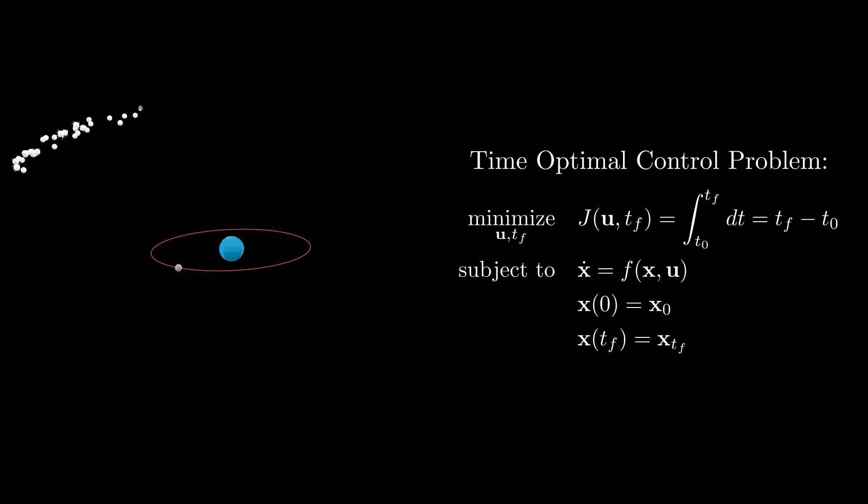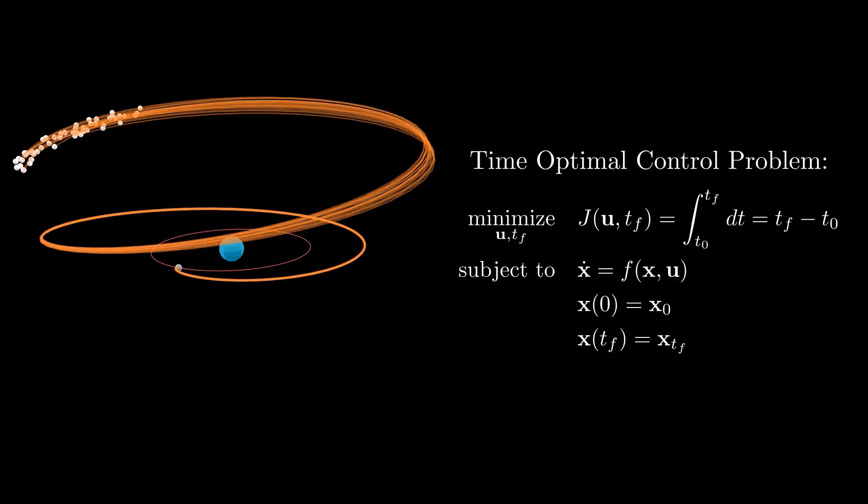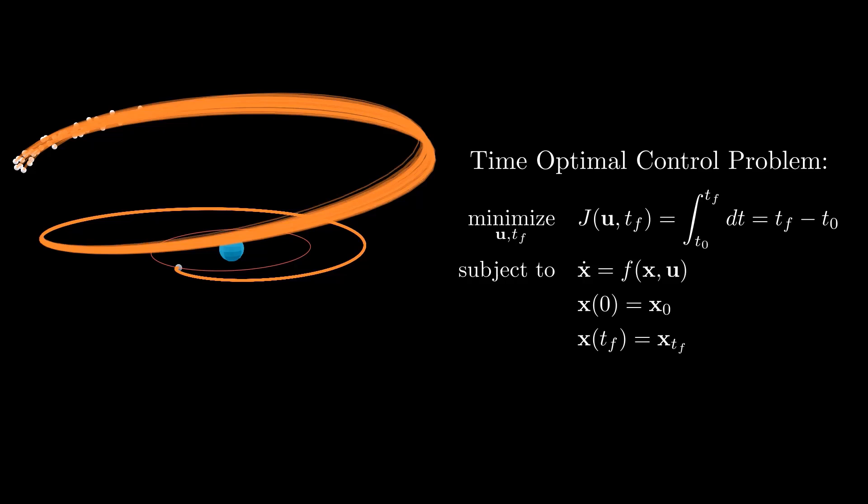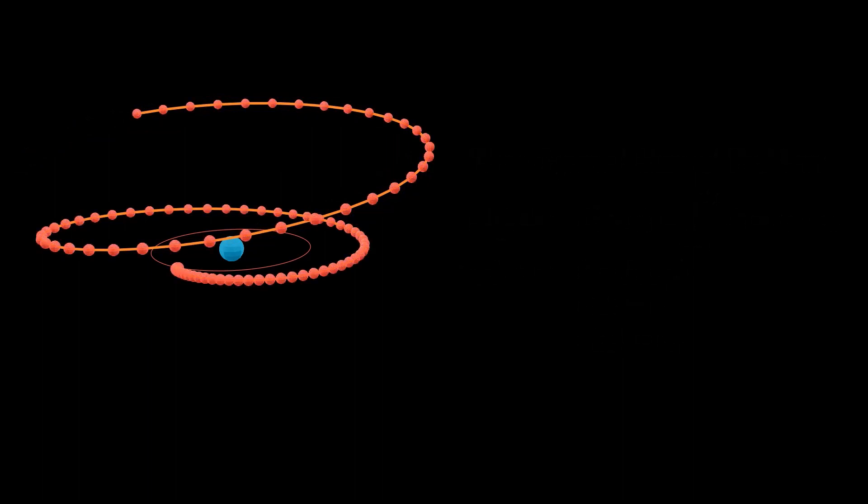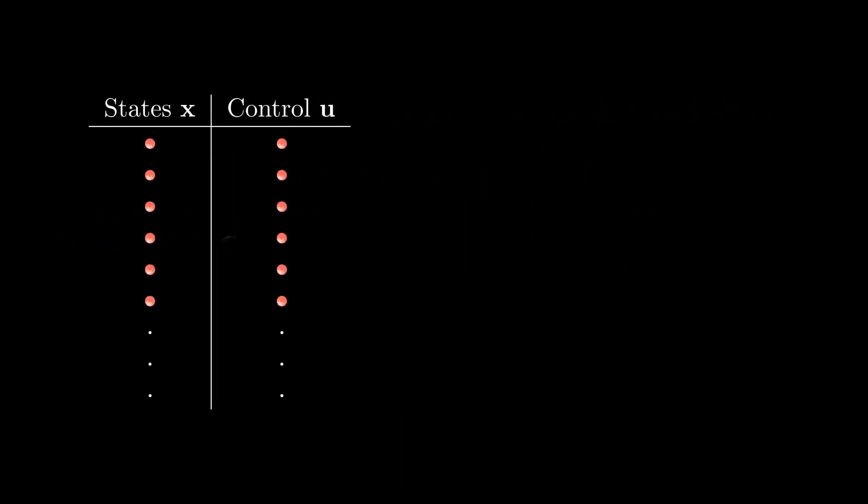Consider solving thousands of two-point boundary value problems between a range of different initial conditions but with the same final conditions. This results in a bundle of trajectories which roughly encompasses the state space the spacecraft might encounter during the mission. Let's now sample points along each trajectory. Since these are all optimal trajectories, each sample contains a state vector and the corresponding optimal controls.